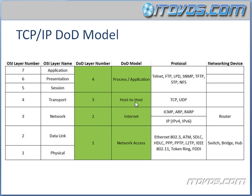The Host-to-Host layer is actually the same as the transport layer. The internet layer is the same as the network layer, and the data link and physical layers are combined together in the network access layer.